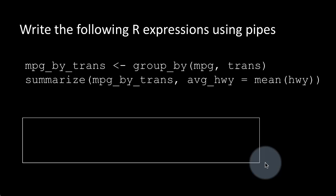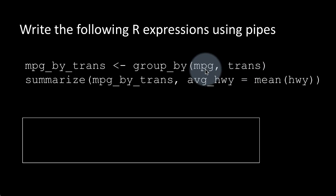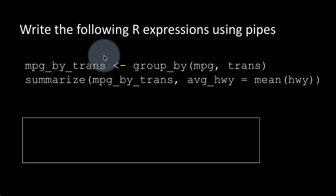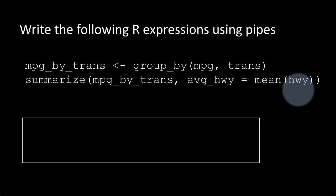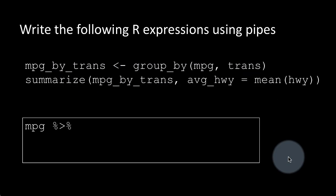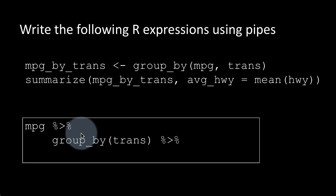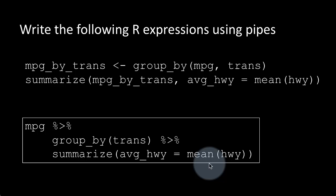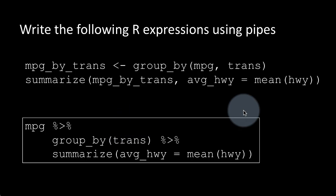Let's look at one more dplyr example. We say mpg_by_trans <- group_by(mpg, trans), grouping the mpg data frame by the transmission column. Then we take that result and summarize it, calculating average highway miles as mean(hwy). So for every transmission type we get the average highway mileage. Using pipes: mpg %>% group_by(trans) %>% summarize(avg_hwy = mean(hwy)). The first argument mpg is coming on the pipe. We'll be doing this pattern — grouping then summarizing — quite a lot.